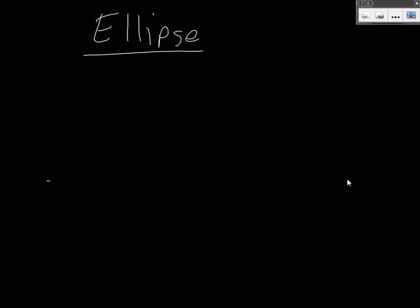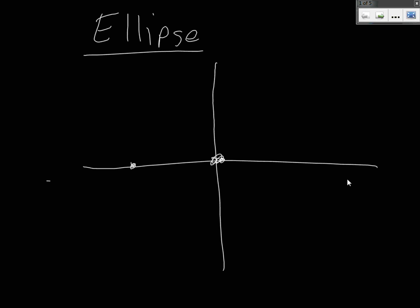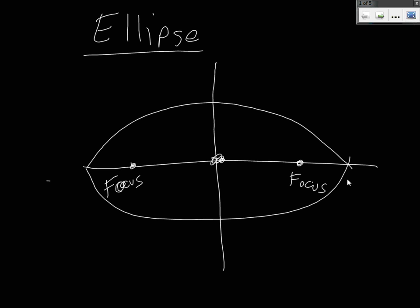Let's look at this a little bit more carefully. The origin is there. Now the points where you tack down the ends of the string are called your focus points. An ellipse has two focus points — two focuses are called foci. When you draw the ellipse, let's make a couple of assumptions. The first one: this point is negative C zero — it's C units to the left of the center — and this one is C units to the right of the center.